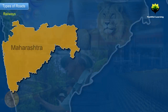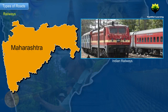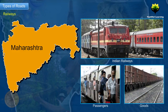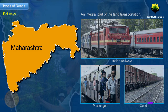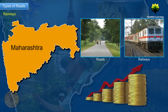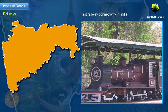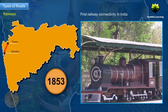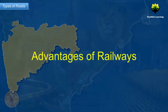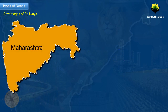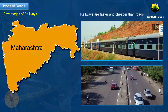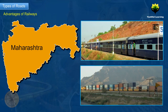Railways. The Indian Railways is owned by the government and is used to move passengers and goods over long distances, forming an integral part of land transportation. Just like roads, railways also contribute to the economic development of a region. The first railway connectivity in India was established between Mumbai and Thane in 1853, covering a distance of 34 kilometres. Advantages of Railways: For long distance travel, railways are faster and cheaper than roads. They are the apt choice for transporting heavy and bulky products and help in the industrial development of the region.